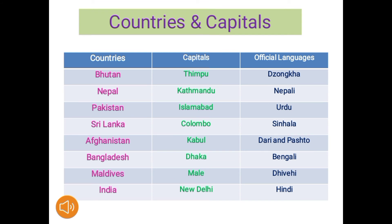Now we know about the countries and their capitals. Turn to page 6 and see the table: countries, capital, and official language. Number 1: Bhutan — capital Thimphu, official language Dzongkha (the D is silent, pronounced Zongkha). Nepal — Kathmandu, Nepali. Pakistan — Islamabad, Urdu. Sri Lanka — Colombo, Sinhala. Afghanistan — Kabul, Dari and Pashto. Bangladesh — Dhaka, Bengali. Maldives — Malé, Dhivehi. India — New Delhi, Hindi. Remember each country's capital and official language.